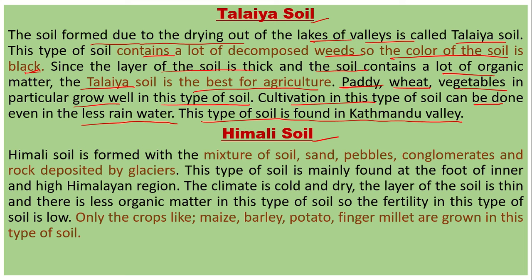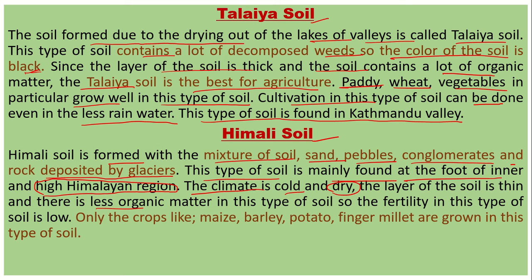The fifth one is Himalayan soil. Himalayan soil is formed with a mixture of soil, sand, pebbles, conglomerates, and rock deposits by glaciers. It is mainly found at the foot of the inner and high Himalayan region. The climate is cold and dry, the layer of the soil is thin, and there is less organic matter, so the fertility of the soil is very low.